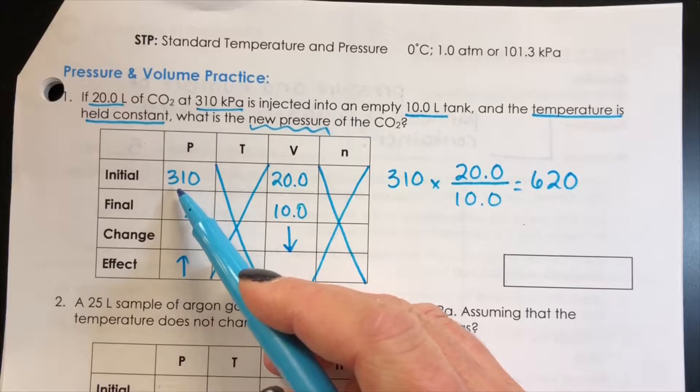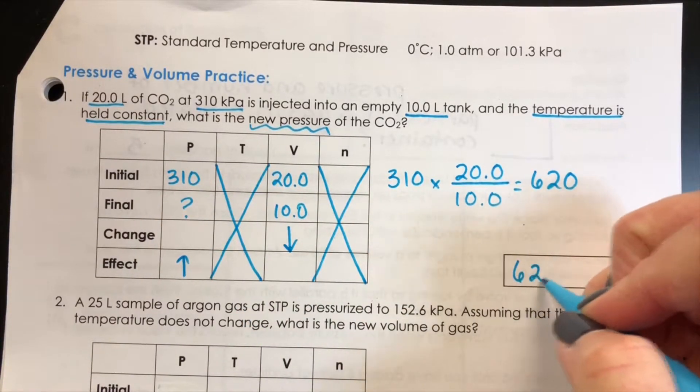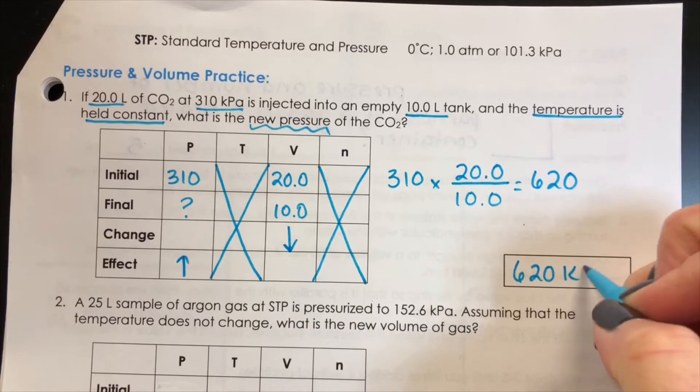We need two sig figs in our answer which it already has, and so it would be 620 kPa.